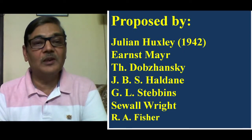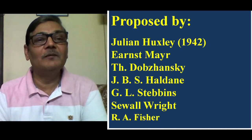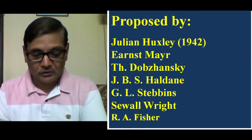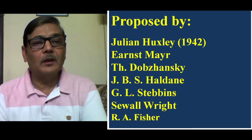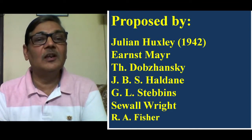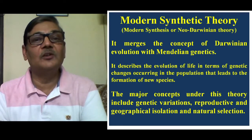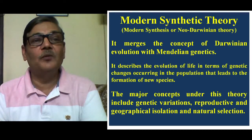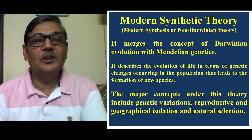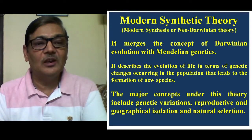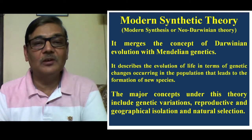How evolutionary changes take place among individuals of a species — that concept was developed by these people, and they gave the idea of the synthetic theory of evolution. Since it was proposed during 1942, they added the term 'modern.' Otherwise, people simply call it the synthetic theory of evolution, or they also call it the neo-Darwinian theory because it was proposed after Darwin. This particular theory merges the concept of Darwinian evolution with Mendelian genetics, and it describes evolution in terms of genetic changes occurring in the population that lead to the formation of new species. The major concepts under this theory include genetic variations, reproductive and geographical isolation, and natural selection.